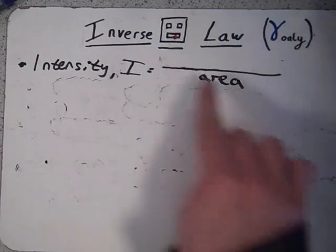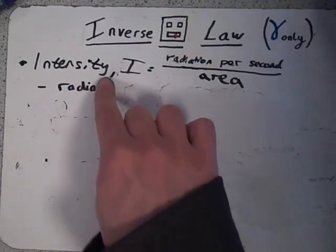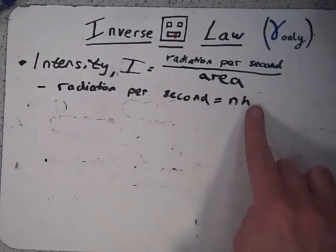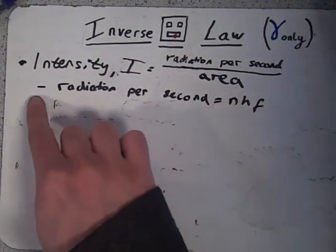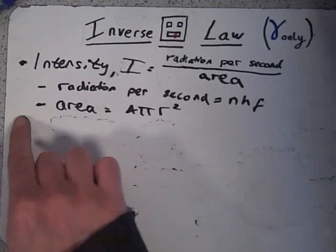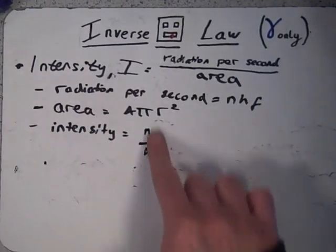For a point source emitting n gamma photons per second, each with energy Hf, the radiation energy emitted per second is equal to nHf. At distance r from the source, all photons emitted pass through a total area of 4πr², which is the surface area of a sphere with radius r.